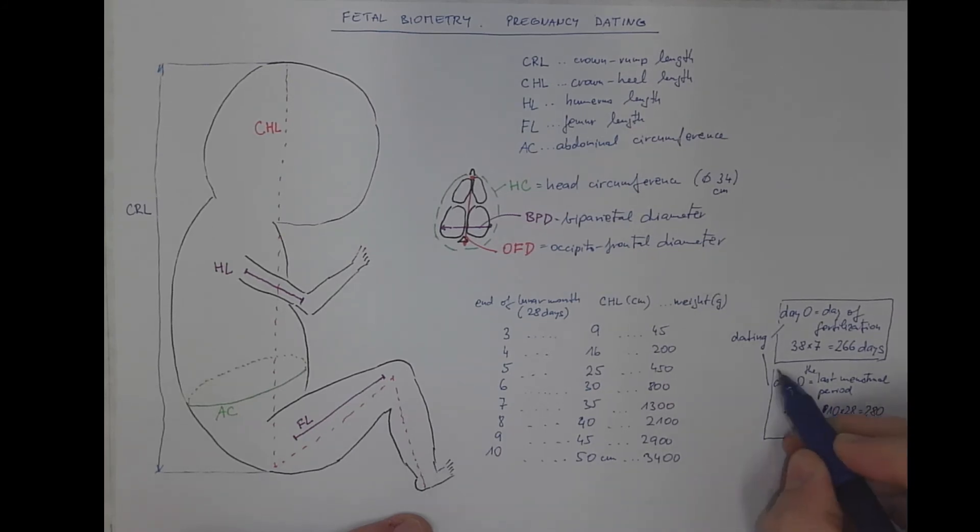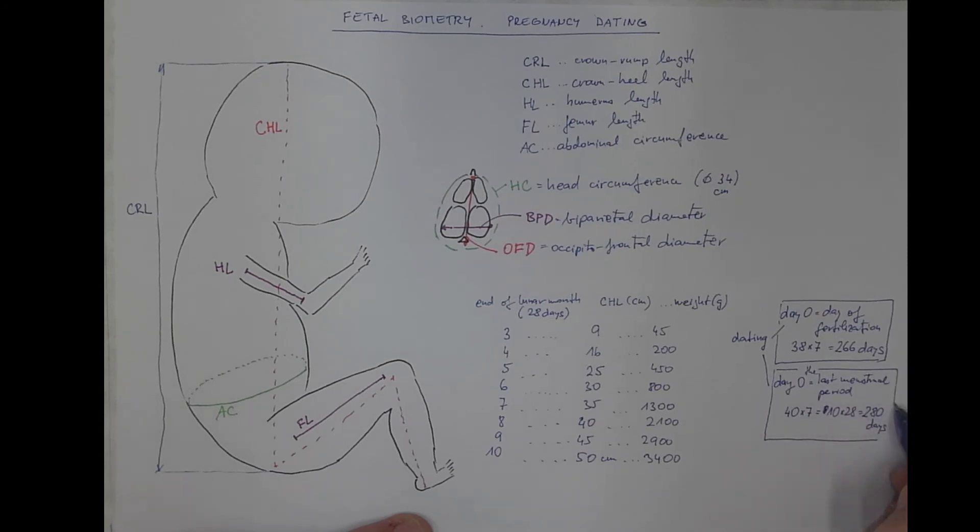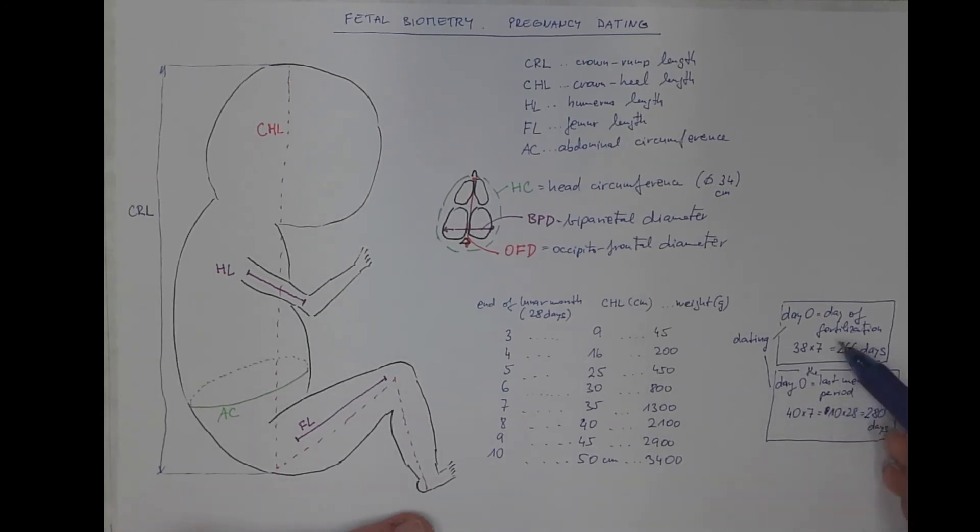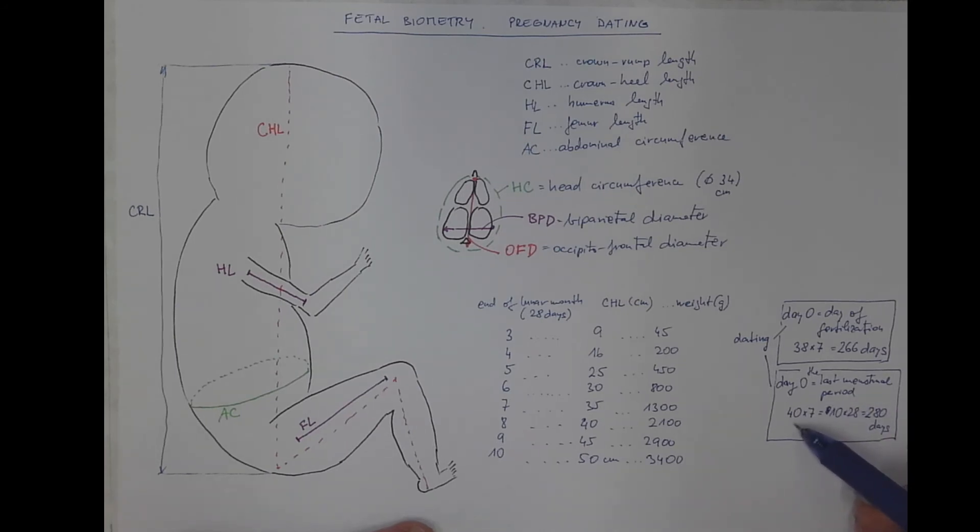So whenever you will be referring to any data from the literature or medical record, make sure which system are you talking about and which system are you using to avoid any confusion. The difference is that the last menstrual period occurs approximately 14 days, that makes two weeks before the ovulation, which is usually also the day of the fertilization.